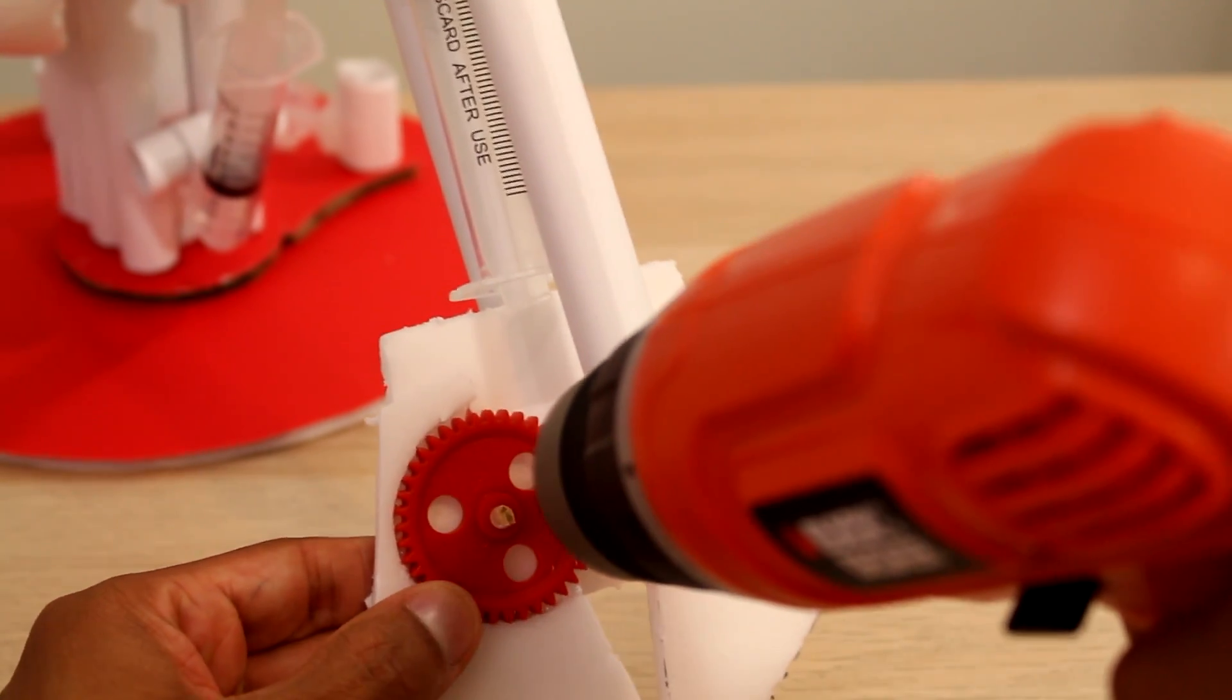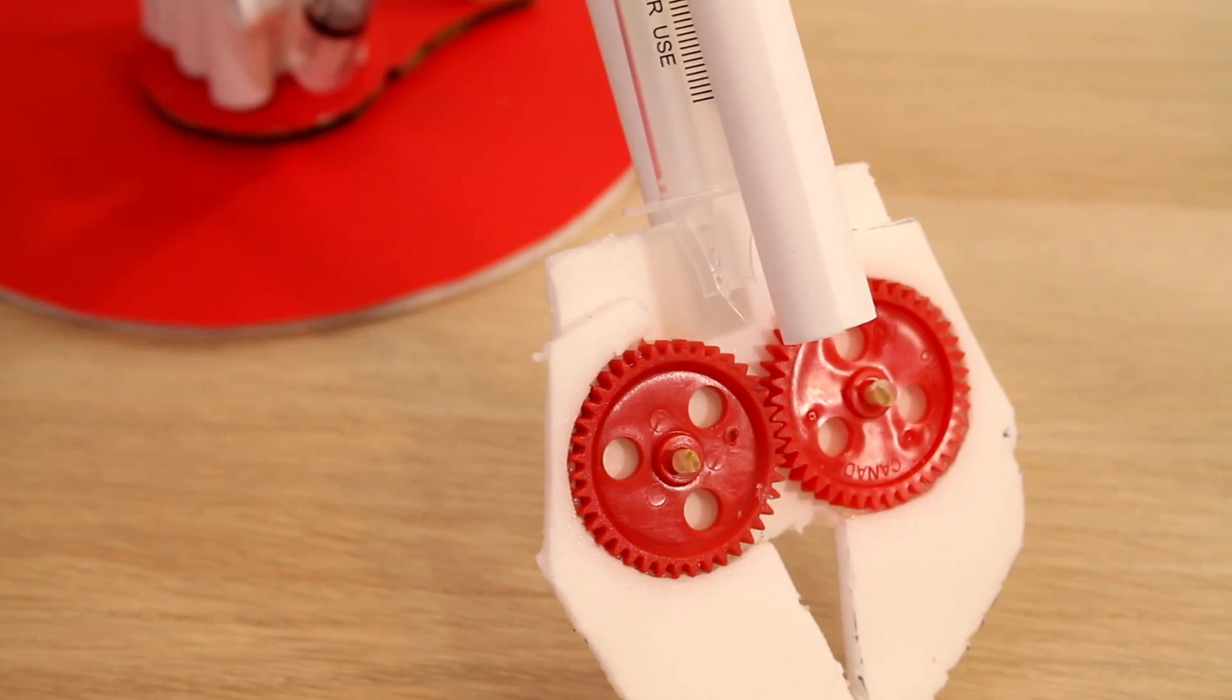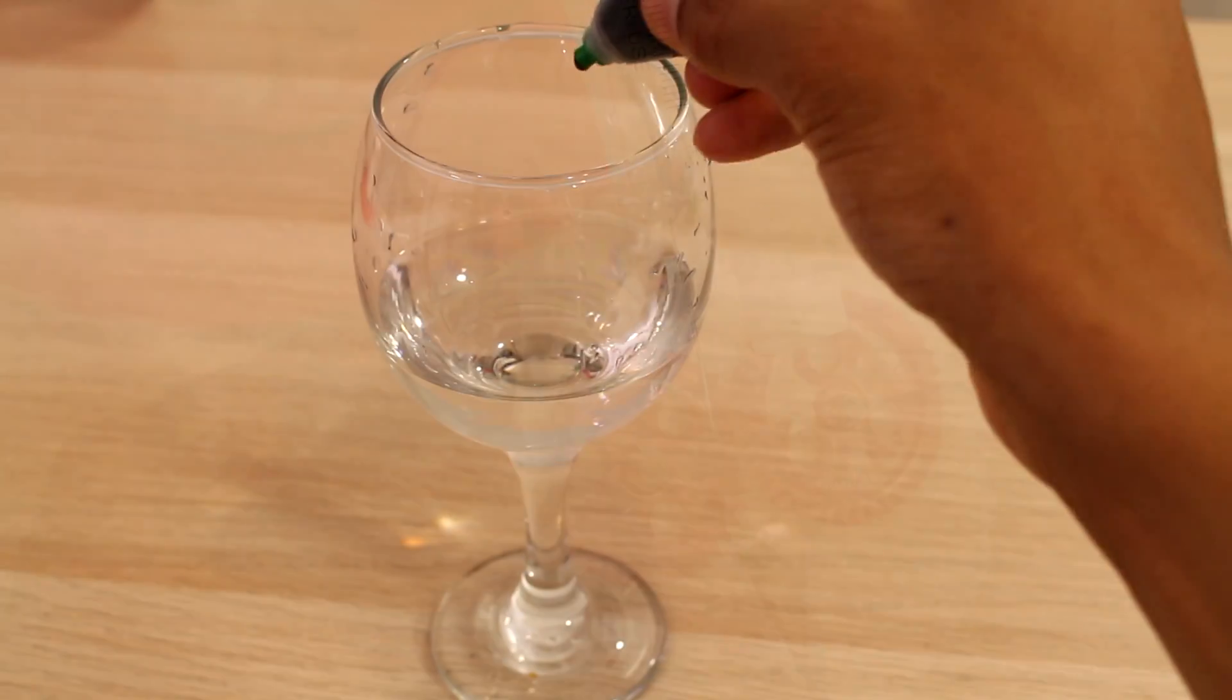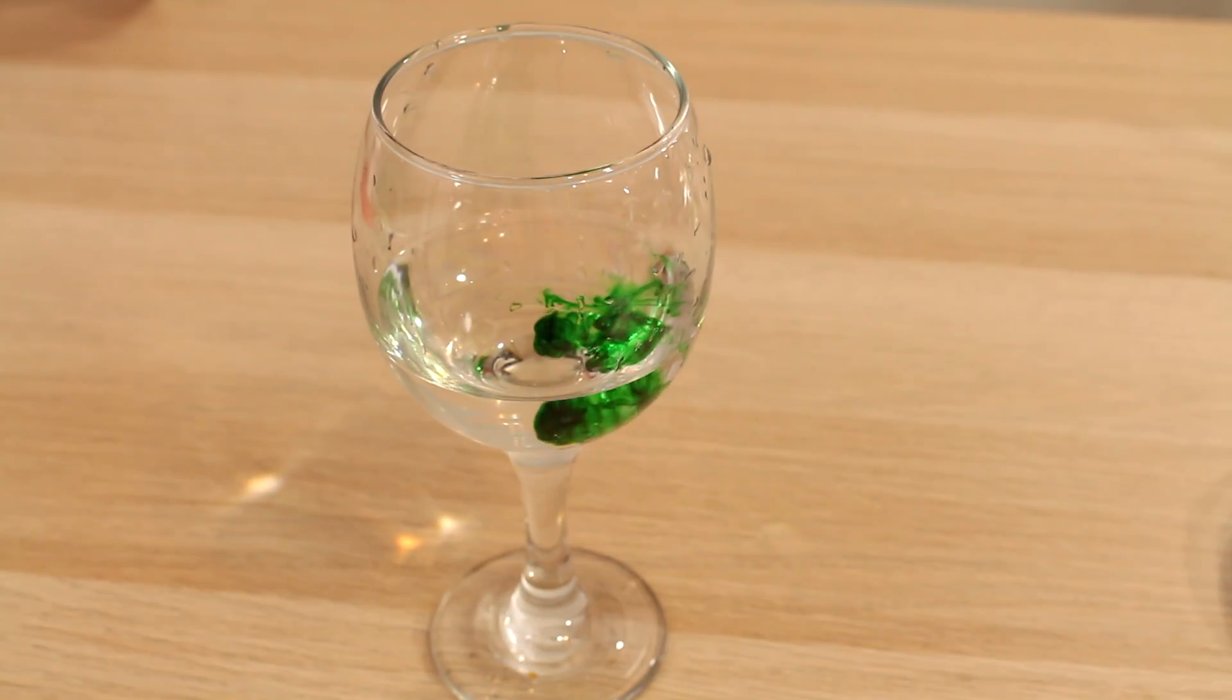And then we're going to drill a little hole in one of the gears. And we're going to attach just a little piece of metal. You can use a clothes hanger or a paper clip. And just stick it in there so that when the syringe goes out, it turns the gear.